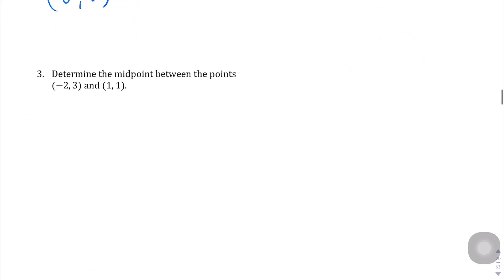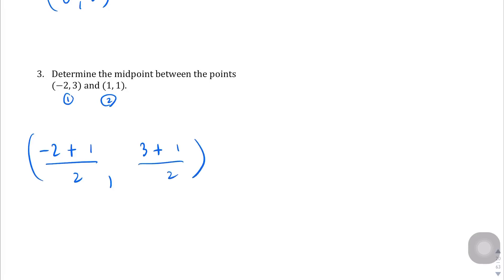Lastly, question number 3 for midpoints. X1 is negative 2 plus X2 is 1, divided by 2. Y1 is 3 plus Y2 is 1, divided by 2. Negative 2 plus 1 is negative 1, divided by 2 gives negative one-half. And 3 plus 1 is 4, divided by 2 is 2. So the midpoint is negative one-half, 2.